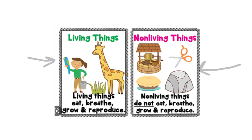These are non-living things. What do we mean by the word non-living things? Non-living things do not eat, do not breathe, do not grow and do not reproduce. For example, the pair of scissors. Does the pair of scissors eat? No. Does it breathe? No. Does it grow? No. Does it reproduce? No. So we call these things non-living things.